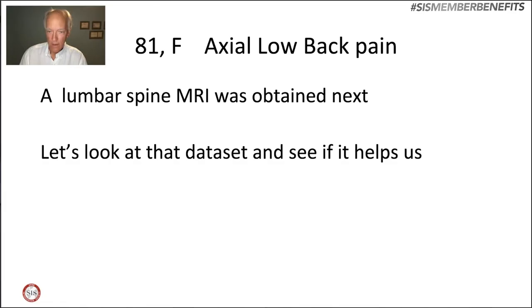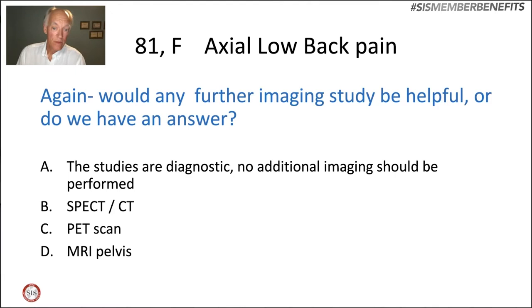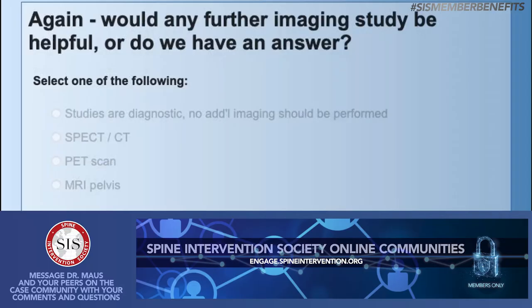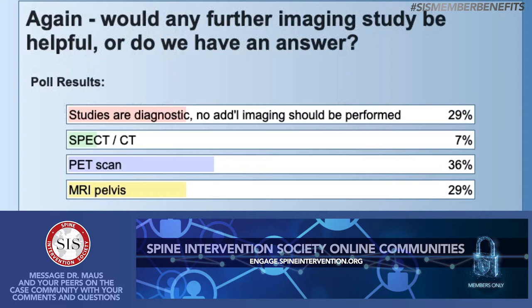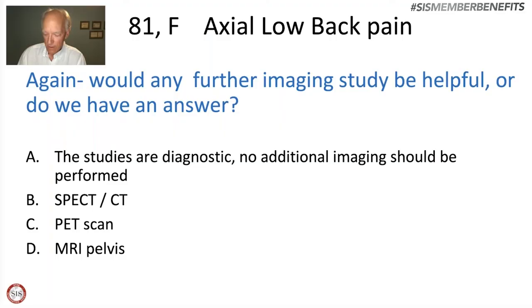Should we do any further imaging or do we have an answer? Option A: studies are diagnostic, no additional imaging. B: SPECT CT. C: PET scan. D: MRI of the pelvis. She does have an underlying history of malignancy, she's osteopenic, she's elderly — all these things factor into the likely causal events. The answer I would suggest is we should do an MRI of the pelvis.